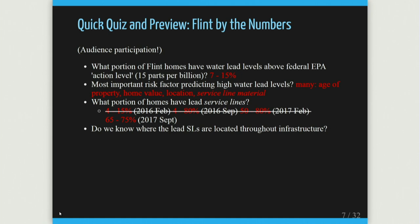Do we know where the lead service lines are located throughout the infrastructure? Now we have so much more data from the work we've been doing. It's actually surprisingly predictable — we can estimate with reasonably high accuracy, around 85 or 90%, whether a home is going to have a lead service line.